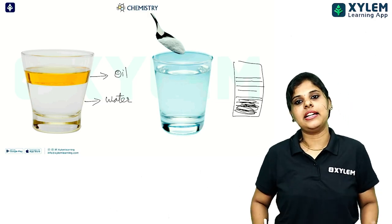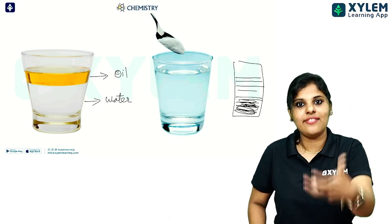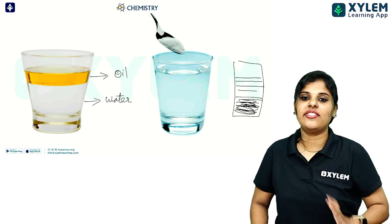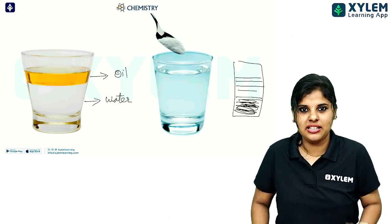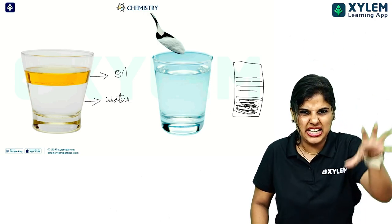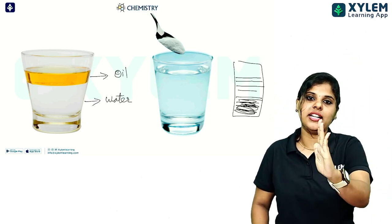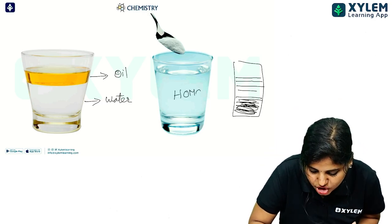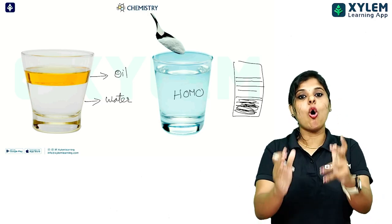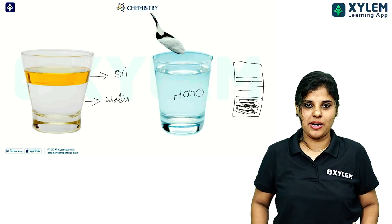If you use sugar in water — panchasar and water — they mix uniformly to the same height, uniform throughout. So it is a homogeneous mixture.